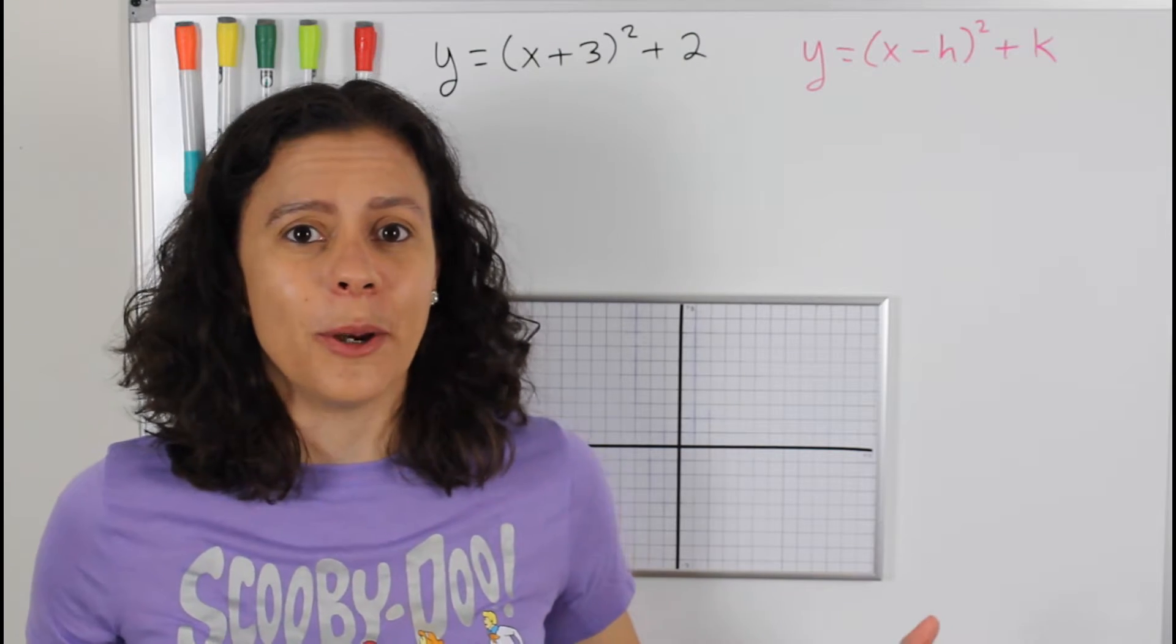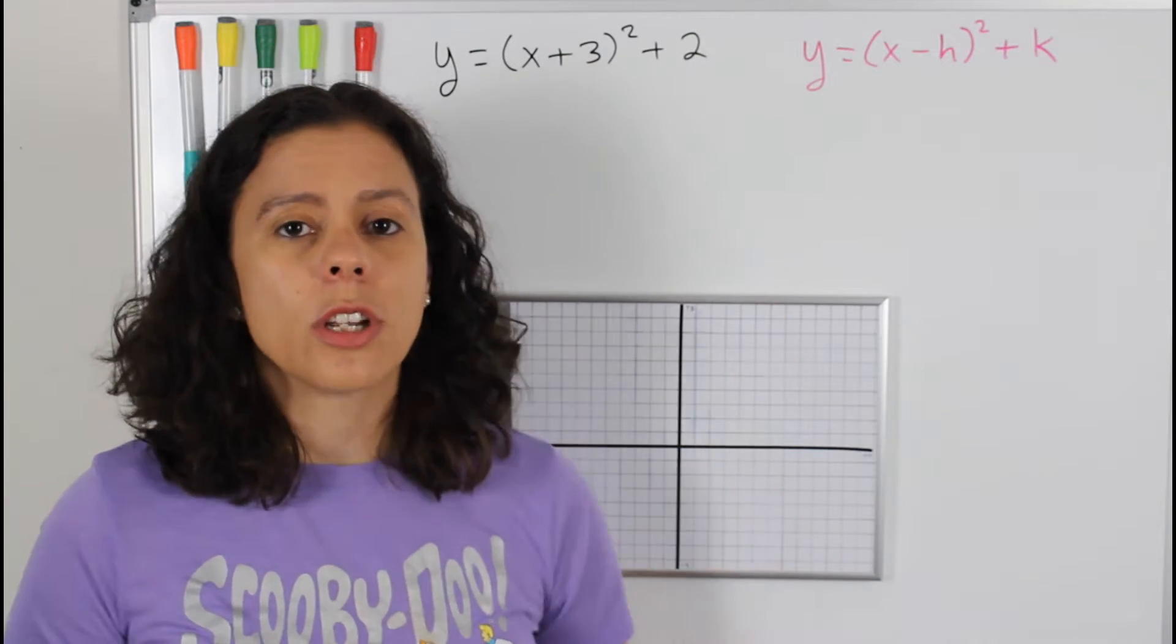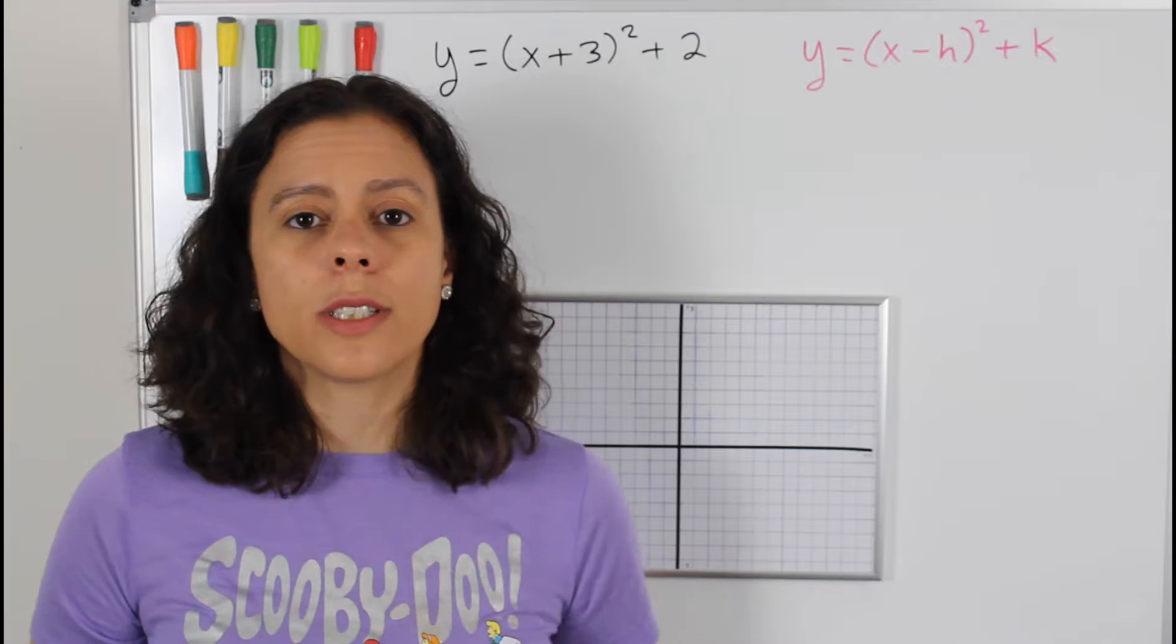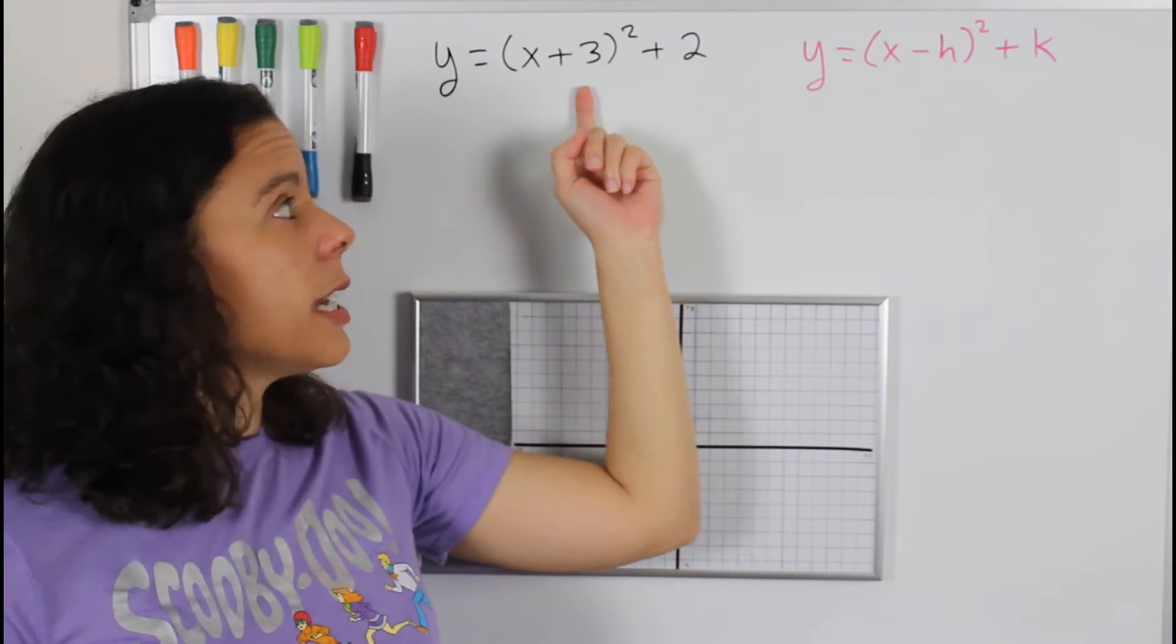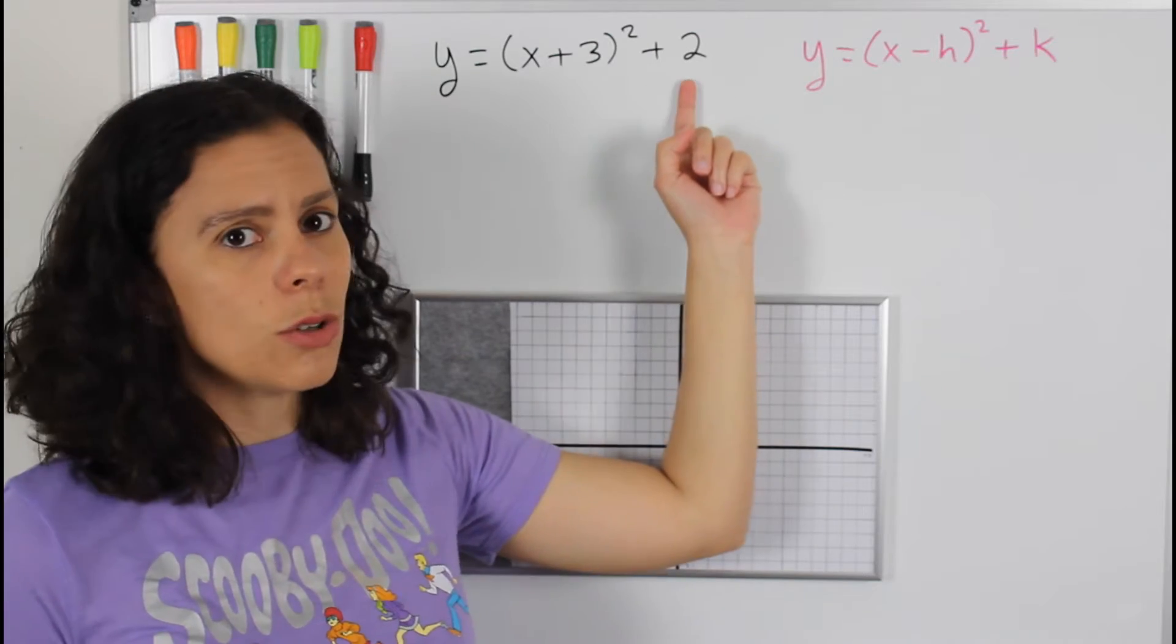So the vertex is already given to you. All we have to do is look at the equation. We know that the vertex is always written in the form of h, k. So we know that three is going to be my h and two is going to be my k.